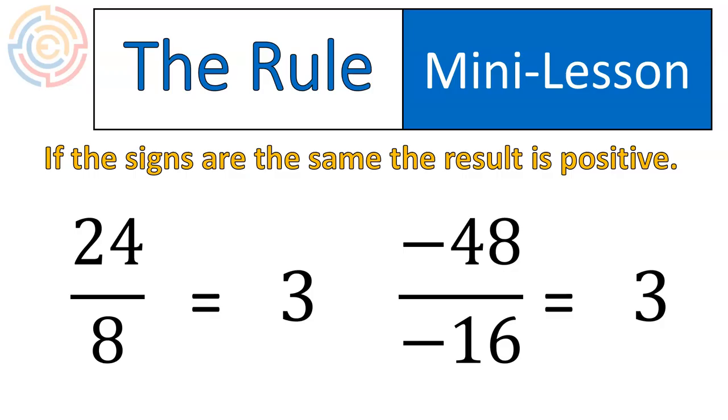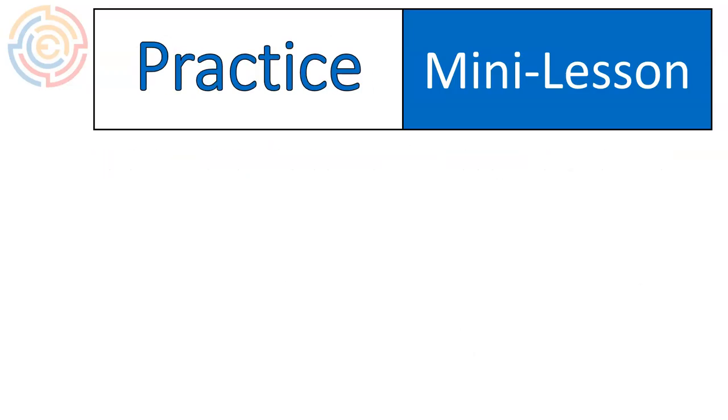So if the signs are opposite, the result is negative. If the signs are the same, the result is positive. It's time for some practice. And I want you to practice like you mean it. Like your pet's life depends on it or something. I don't know. Negative 9 divided by negative 3. Go ahead and give that one a shot.